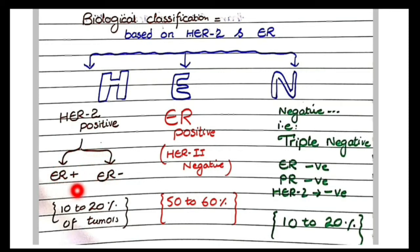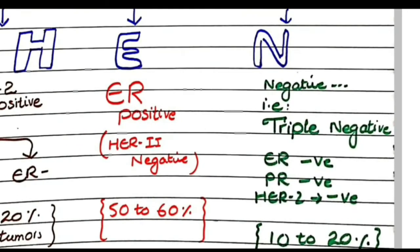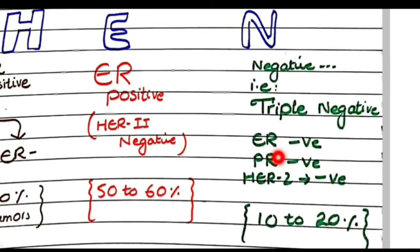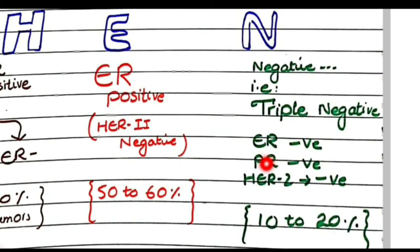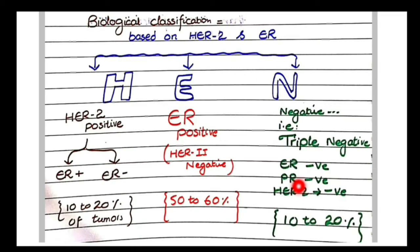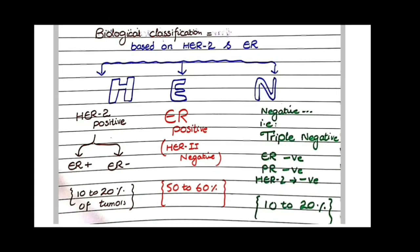About 10 to 20 percent of breast cancers are HER2 positive. The third category, N, stands for negative — specifically triple negative. These cancers are called triple negative because they lack estrogen receptors, progesterone receptors (PR), and do not show over-amplification of the HER2 gene. About 10 to 20 percent of cancers are triple negative. To summarize, ER positive tumors are the most common type.